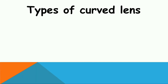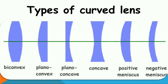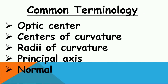How many types of curved lenses are there? There are six types of curved lenses. Starting from the left: biconvex lens, plano-convex lens, and convexo-concave lens — which we call negative meniscus. Coming to our topic of common terminology, we have five major terms to be discussed: optic center, centers of curvature, radii of curvature, principal axis, and normal.